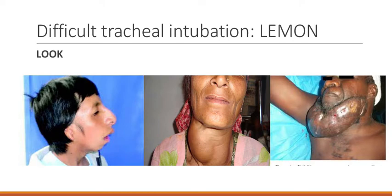L in the mnemonic stands for Look — this is pretty straightforward. These are things that are apparent, such as a patient with micrognathia, patients with neck swelling, neck tumors, or a neck scar. We know just by looking at them that these patients are going to be hard to intubate, so we should have an experienced provider with us.